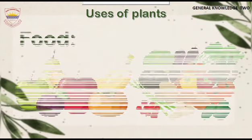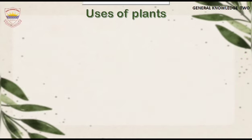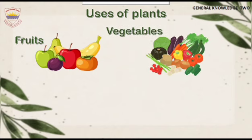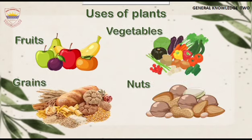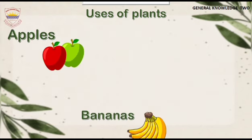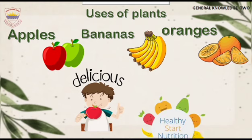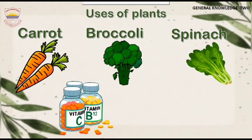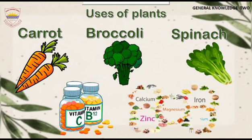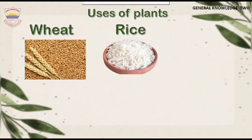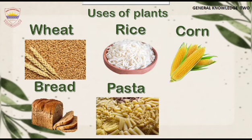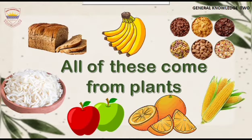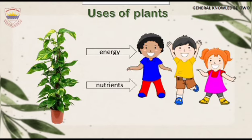Uses of Plants — Food. We get food from plants. We eat various parts of plants, such as fruits, vegetables, grains, and nuts. Fruits like apples, bananas, and oranges are delicious and nutritious. Vegetables like carrots, broccoli, and spinach are packed with vitamins and minerals. Grains like rice, wheat, and corn are used to make bread, pasta, and cereals. All these come from plants. Plants give us the energy and nutrients our bodies need to stay healthy.